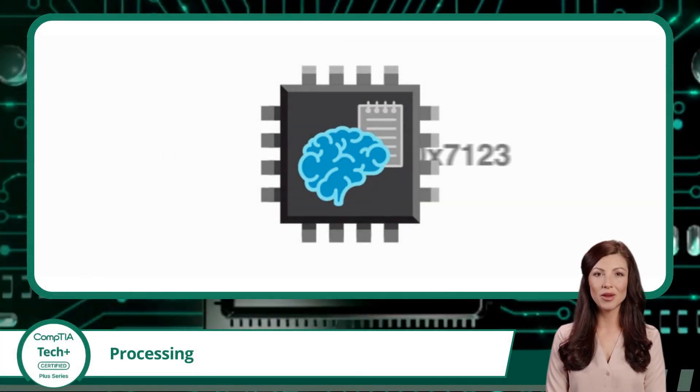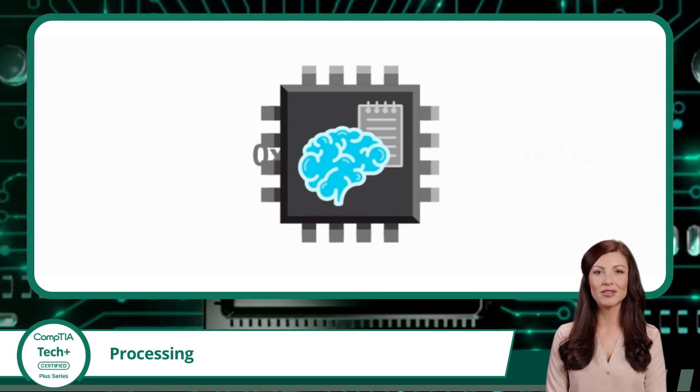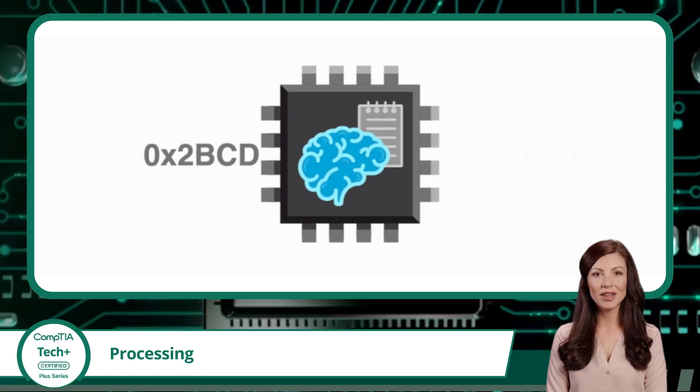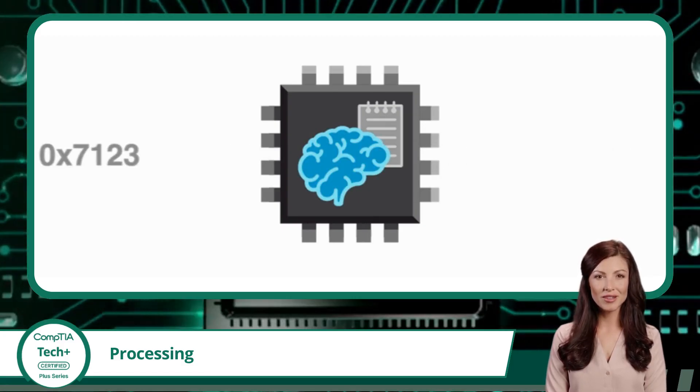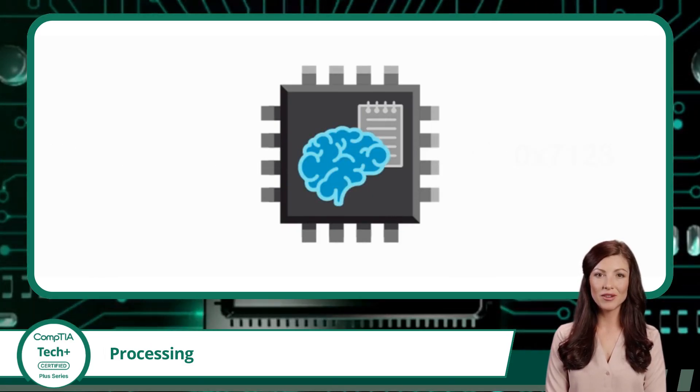When the computer receives input, like a button press, a typed sentence, or a scanned image, it doesn't just sit there. The processor gets to work. It takes that input, or even data that's already been stored, and manipulates it based on instructions it receives from software programs.